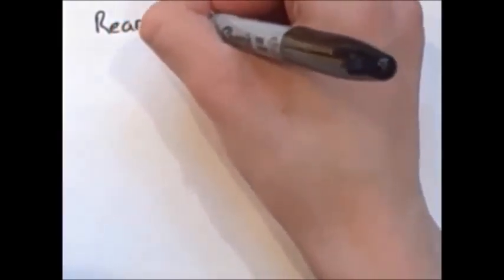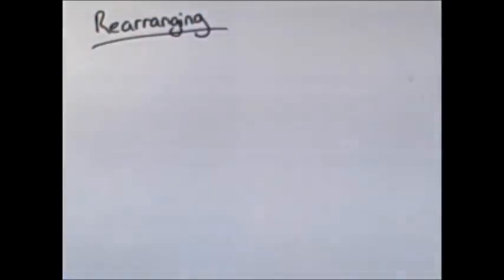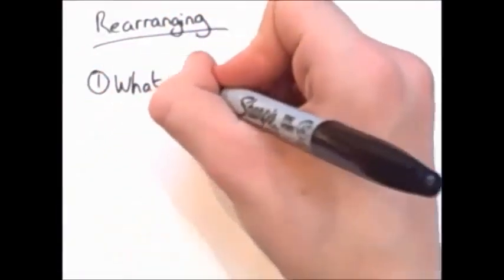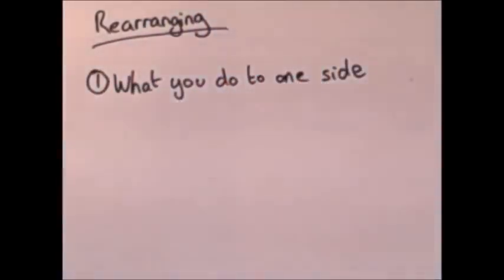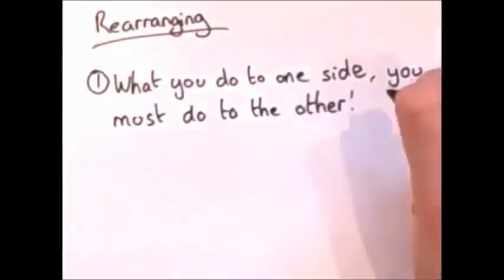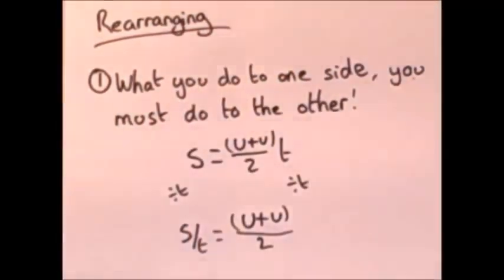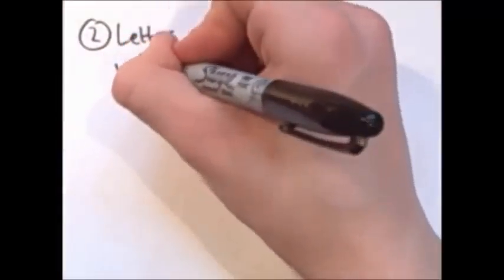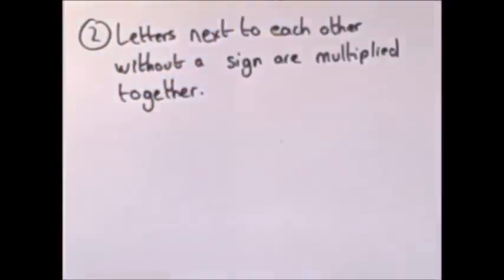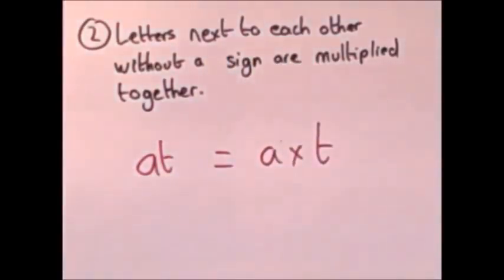These formulas need to be rearranged in different orders to get different outcomes. The formulas on their own only give distance and end speed. When rearranging, there are several things you need to remember. What you do to one side, you must do to the other. For example, if you divide by T, both sides have to be divided by T. Letters that are next to each other, without a sign in between, are multiplied together, so AT is actually A times T.